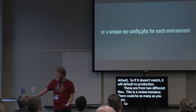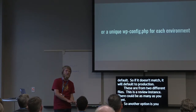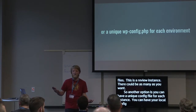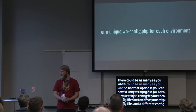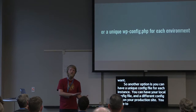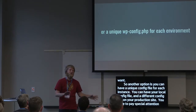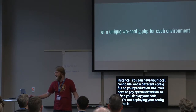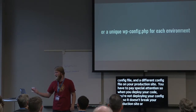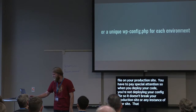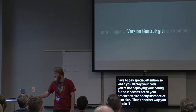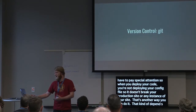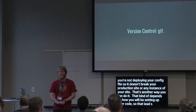Another option is to have a unique config file for each instance — a local config file and a different one on your production site. You have to pay special attention so that when you deploy your code you're not also deploying your config file and breaking your production site. That's another valid way to do it, and it depends on how you're setting up your code. That leads to the next topic: version control.